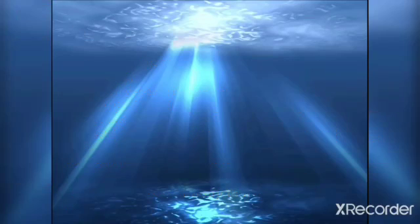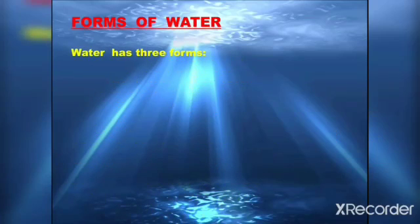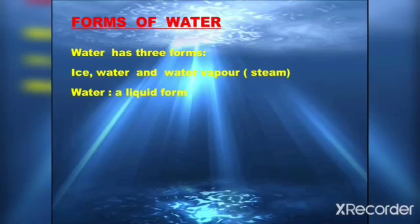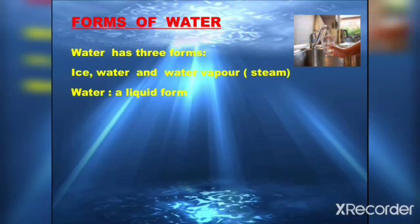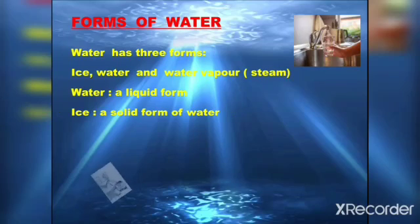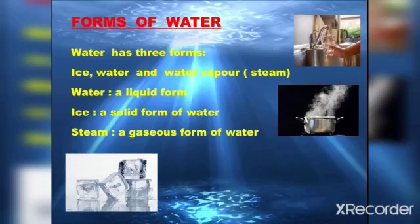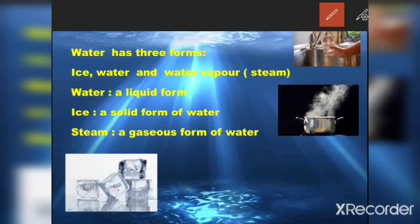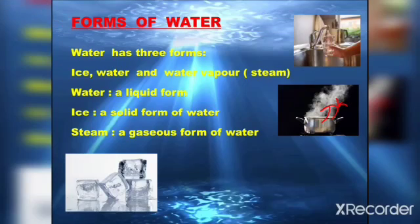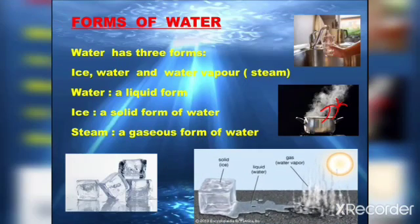Children, do you know about 70% of our body is made up of water. Water has three forms: ice, water, and water vapor. The water which we drink is a liquid form of water. Ice is a solid form of water, and steam is a gaseous form of water. When we boil water, it changes into water vapors or steam, which is the gaseous form of water.